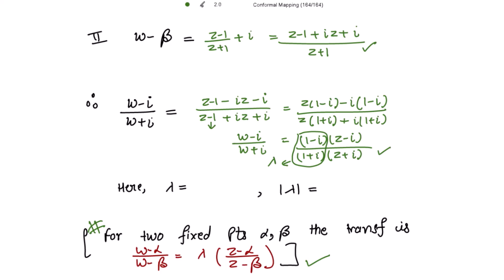Now solving for lambda, if you rationalize this, lambda is equal to 1 minus iota over 1 plus iota. Rationalizing by multiplying 1 minus iota over 1 minus iota, we get 1 squared plus iota squared minus 2 iota divided by 2. The 2 cancels and we get minus iota as lambda.